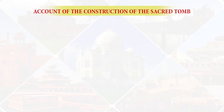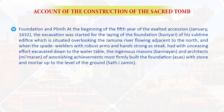On the account of the construction of the Sacred Tomb — Foundation and Plinth. At the beginning of the fifth year of the exalted accession, in January 1632, the excavation was started for the laying of the foundation for this sublime edifice situated overlooking the Yamuna river flowing adjacent to the north. And when the spade-wielders, with robust arms and hands strong as teak, had with unceasing effort excavated down to the water table, the ingenious masons and architects of astonishing achievements most firmly built the foundations with stone and mortar up to the level of the ground.